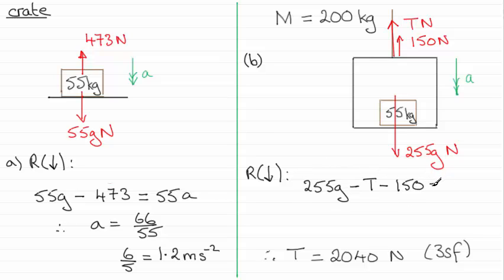And this is equal to the mass, which we now know is 200 plus the mass of the crates. That's 255 kg, and it's got an acceleration of 1.2. So if you rearrange this for T, you should find that you end up with T equaling 2,043.